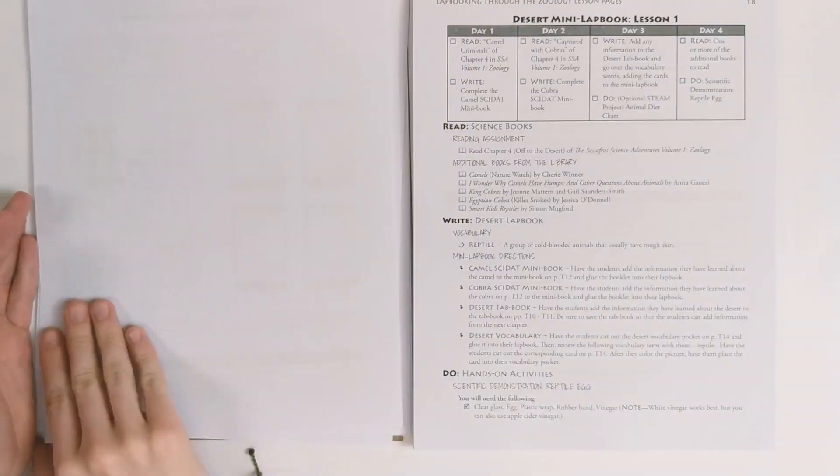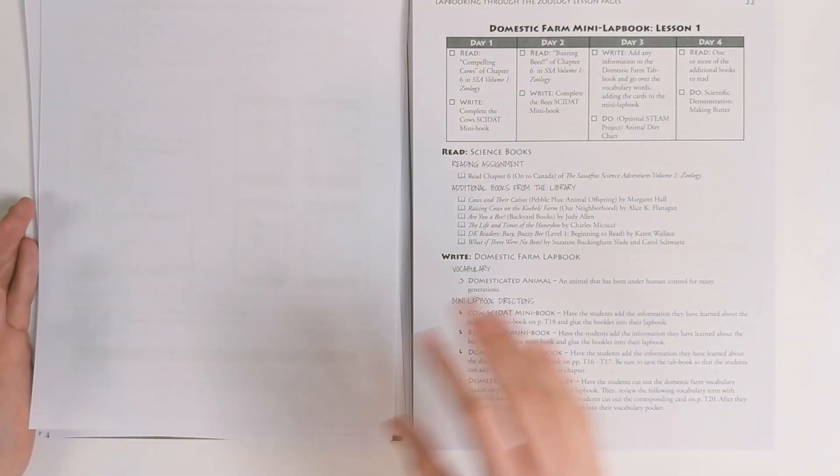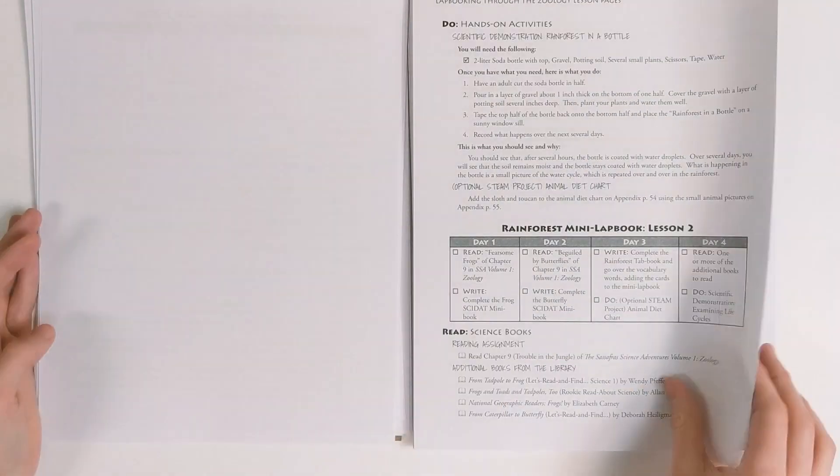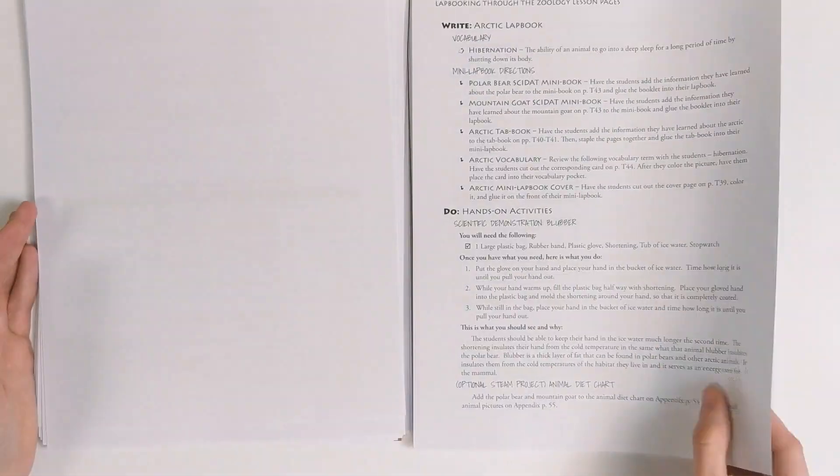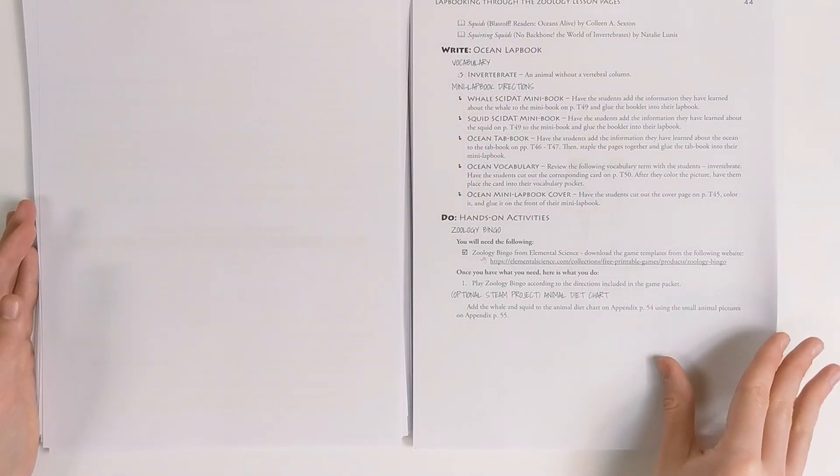Many of the activities in the Lap Booking Guide are the same as those found in the Activity Guide. The main difference is that there's less options in the Lap Booking Guide than there are in the Activity Guide. You'll find two lessons per location, along with an optional schedule for you to use.